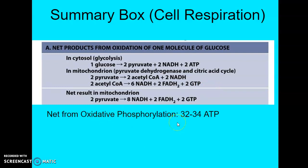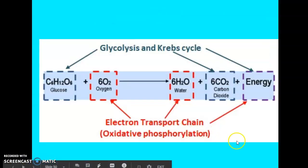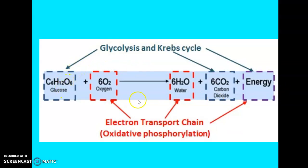From oxidative phosphorylation, the input is ten NADHs — two from glycolysis and eight from the mitochondria — plus two FADH2s. The output is roughly 32 to 34 ATP. The overall respiration equation is: C6H12O6 plus 6O2 yields six water plus six CO2 plus energy in the form of ATP.